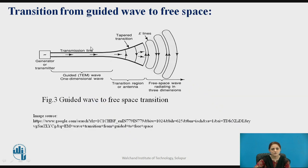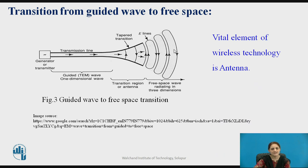This diagram shows the guided wave to free space transition. The transmitting antenna is connected to the generator side, also known as the transmitter side. From this, the electromagnetic wave is generated, traveling through the transmission line such as a waveguide, and then transitions in tapered form into free space — that is, into the antenna. Thus the antenna provides the vital element and plays an important role in wireless technology.